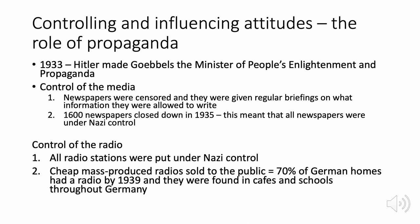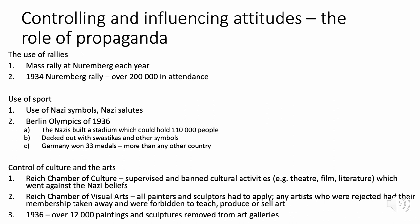Propaganda was used to extend Nazi control throughout society. In 1933 Hitler made Joseph Goebbels Minister of People's Enlightenment and Propaganda. Goebbels controlled the media — giving newspapers briefings on what they were allowed to write and closing those that didn't comply. Radio stations were also under Nazi control, with 70% of German homes having a radio by 1939. The Nazis also relied heavily on mass rallies at Nuremberg each year — the 1934 Nuremberg rally being particularly famous — and used sport, with the Berlin Olympics stadium holding 110,000 people and decked out with swastikas.